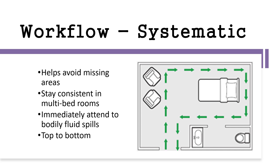The workflow employed in facilities should be systematic and used consistently to prevent missing any areas. Depending on the facility's established procedures, workflows can be left to right or clockwise. Regardless of the number of beds in the room, each resident care area should be cleaned in the same manner — for example, starting at the foot of the bed and moving clockwise. Any bodily fluid spilled should be cleaned immediately according to the facility's bodily fluid spill cleanup policy. Higher surfaces should be cleaned before lower surfaces to prevent contaminants from falling on already cleaned surfaces — for example, cleaning bed rails before the legs and cleaning floors last.